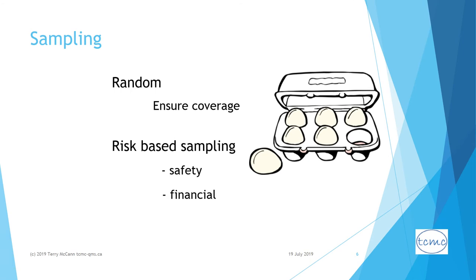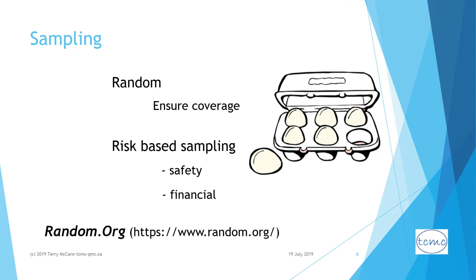An alternative to random sampling is risk-based sampling, where you focus on items that are safety related or that suggest significant financial risk if not performed in a satisfactory manner. A good option is to use a combination of risk-based and random sampling. For random sampling, I personally like to use the website random.org.